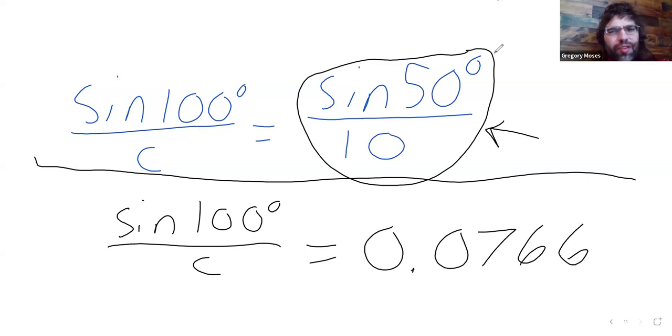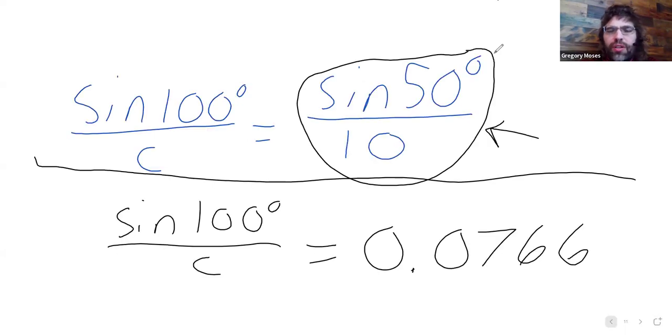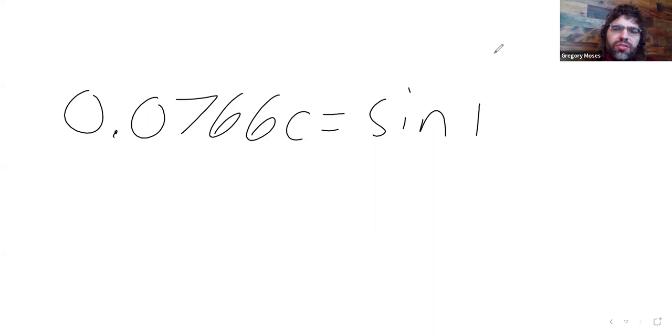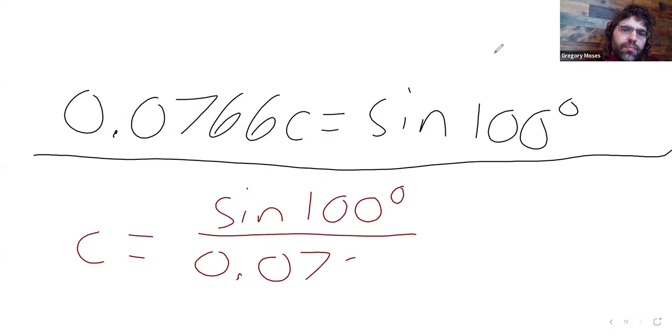We actually found this exact fraction a little earlier, but anyway, now multiply by C. C equals the sine of 100 degrees divided by that decimal, and then plug this into the calculator.